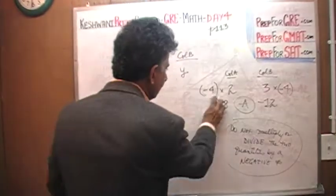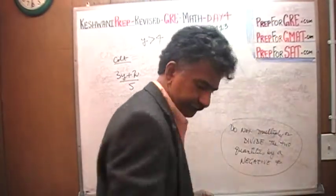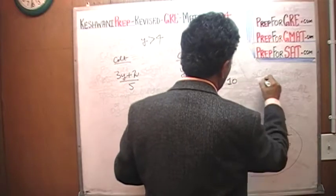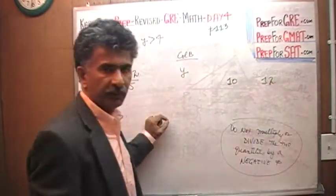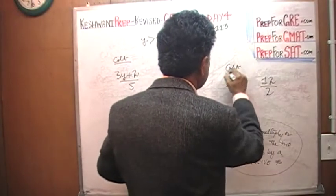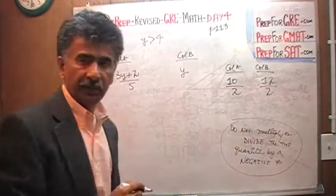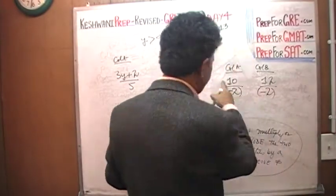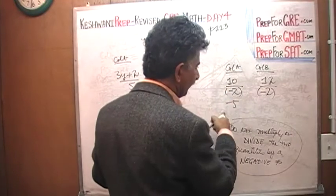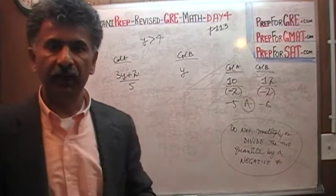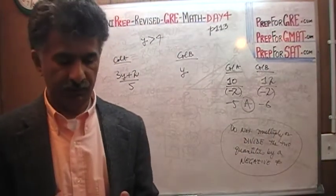Let's do the division example. Which column is bigger — 10 or 12? Of course 12 is bigger. If I divide both columns by 2, column B is still bigger: 12 divided by 2 is 6, still bigger than 5. But if I divide both quantities by negative 2: 10 divided by negative 2 is negative 5, and 12 divided by negative 2 is negative 6. Now the answer is A because negative 5 is larger than negative 6.